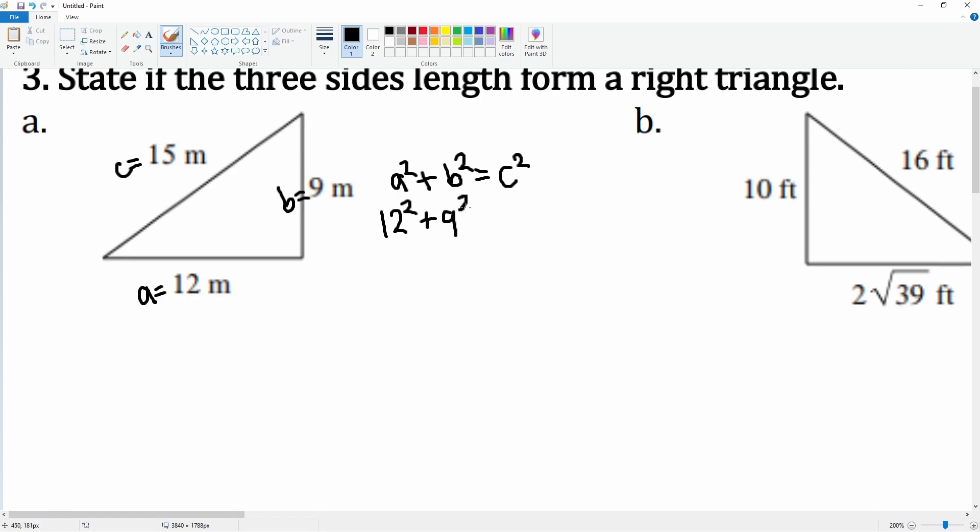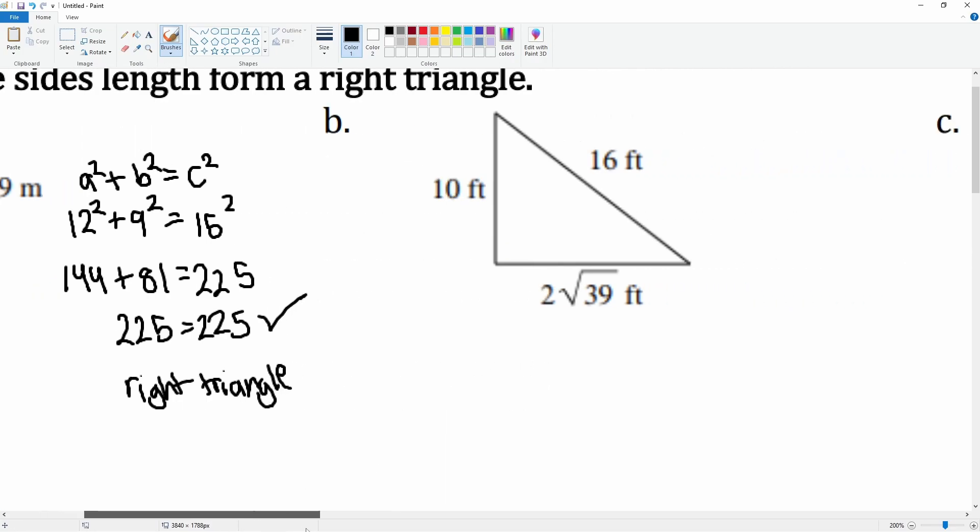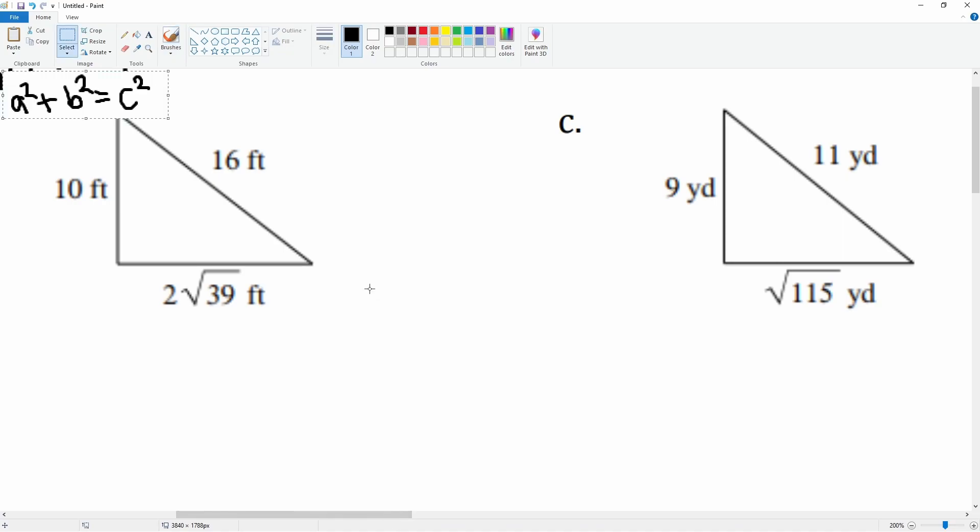12 squared plus 9 squared equals 15 squared. Plug this into the calculator: 12 squared is 144, plus 81 equals 15 squared which is 225. Let's see if this adds up: 144 plus 81 equals 225, so 225 does equal 225. This holds true, so this is a right triangle because a squared plus b squared does equal c squared.